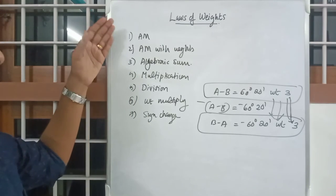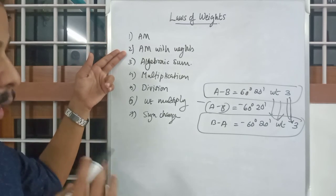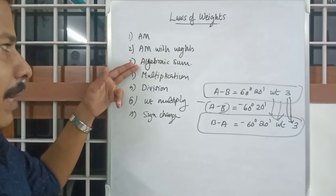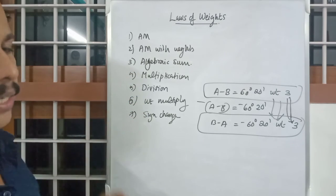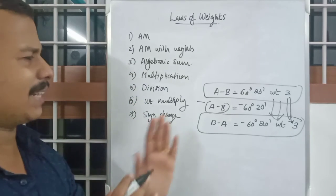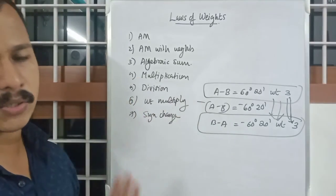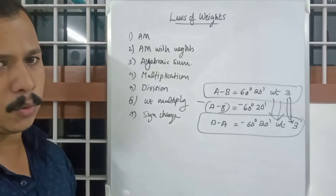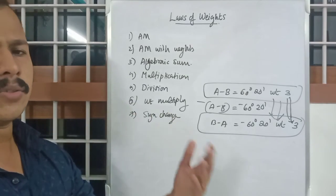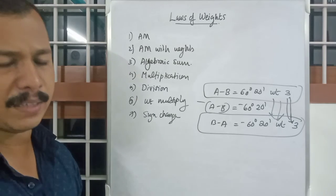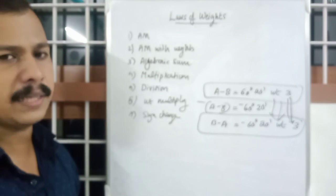Those are the seven laws of weights. First was arithmetic mean; second, arithmetic mean with weight values; third, algebraic sum; fourth, multiplication; fifth, division; sixth, weight multiplication; and seventh, sign change. If you know the example you can understand the law statement and apply it to any type of example. I hope you understood each of the laws of weights.